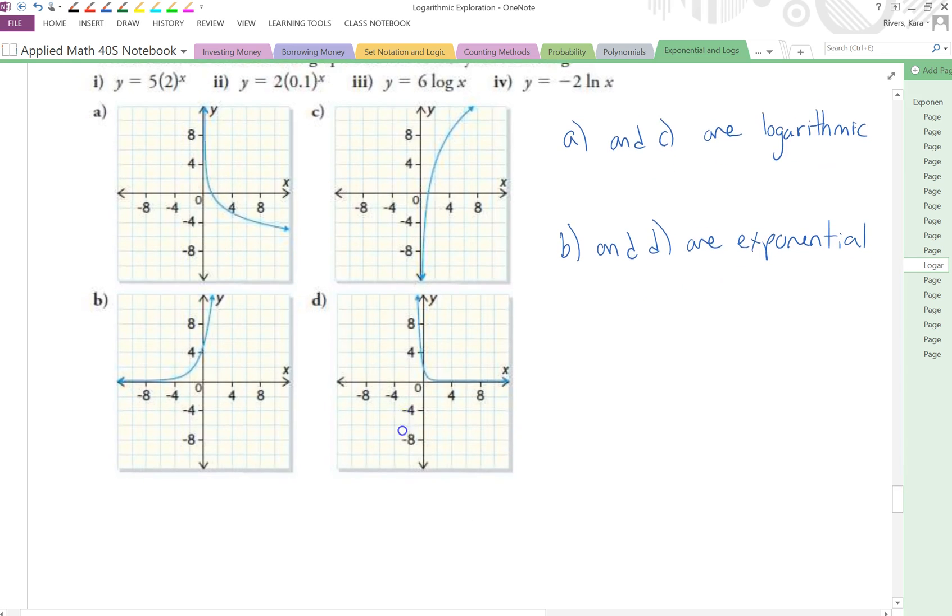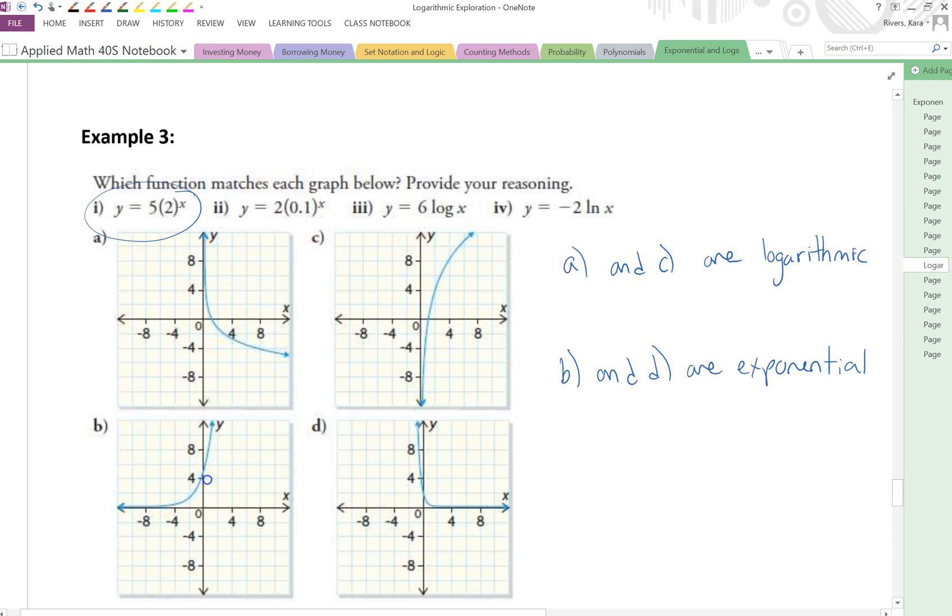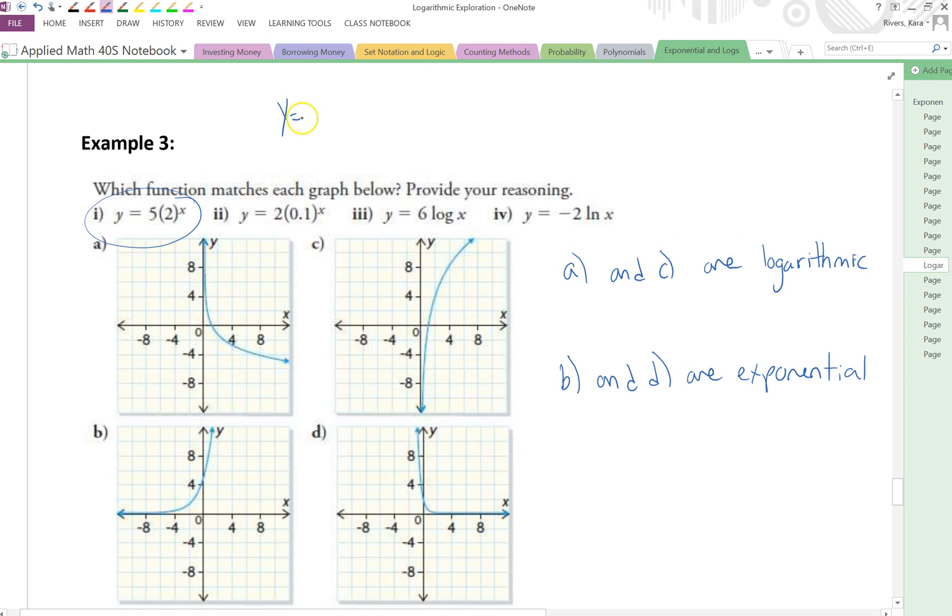So I can see, if I'm going to look at the first function, y equals 5 times 2 to the power of x, I can see that that's going to be an increasing function. How do I know? Well, our function is of the form y equals A times B to the exponent of x. And I know if B is greater than 1, then it's increasing.